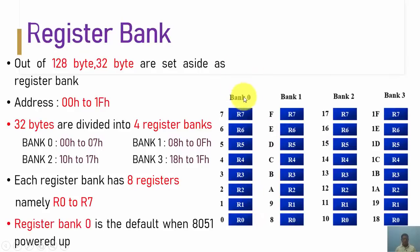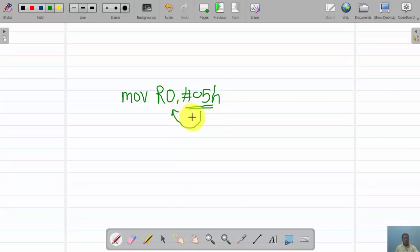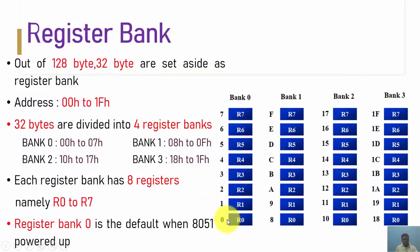By default, when we go for programming, bank 0 is used. So if I write a notation simply as R0, we are going to access by default this memory in bank 0, because bank 0 is selected by default when we turn on the microcontroller. There is one register known as PSW that we will discuss later — with the help of that register, we can switch from one bank to another. For example, if I write the instruction MOV R0, #05H, it copies the data 05H into the R0 register. Since bank 0 is selected by default, the value 05H is copied into the R0 register at memory location 00H.